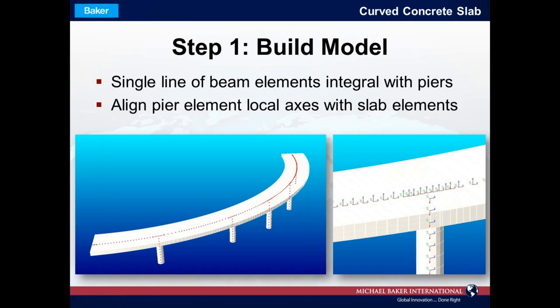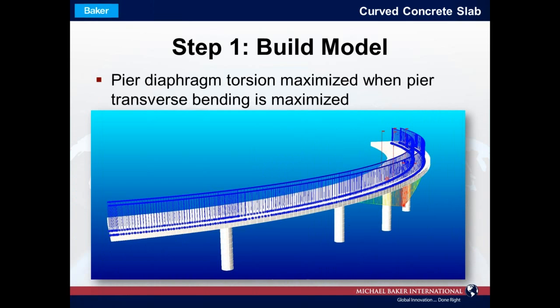The first step is to build an analysis model. Using the longitudinal strip method, it is sufficient to model this bridge as a single line of beam elements integral with the piers. One important note when building this model: make sure the element local axes of the pier at each pier location are aligned with the element local axes of the beam elements used for the superstructure. In MIDAS you can turn on the element local axes display function to check and realign pier element local axes as necessary.